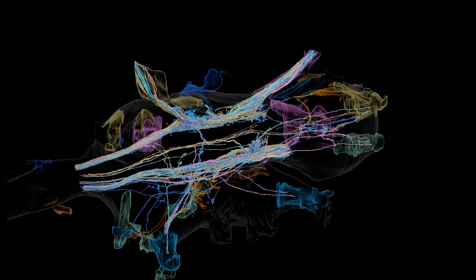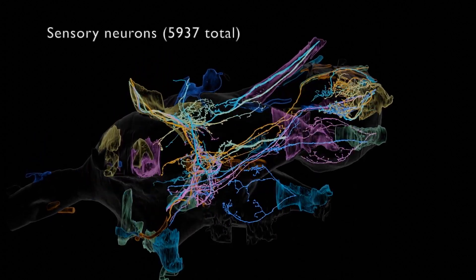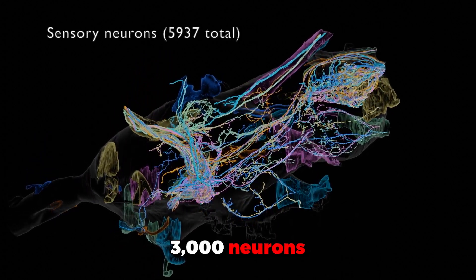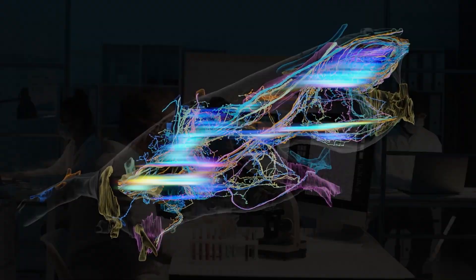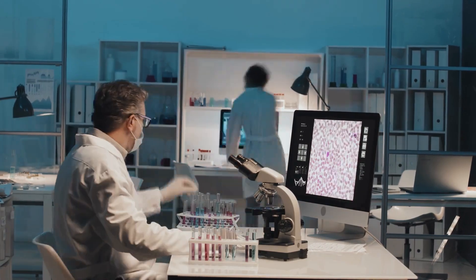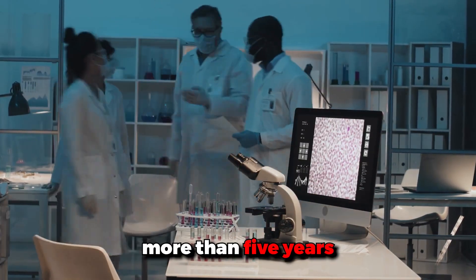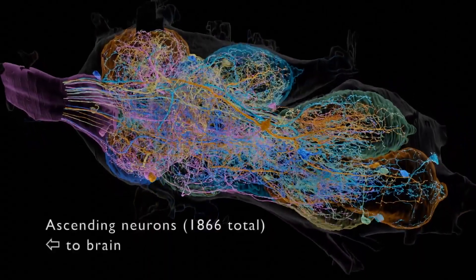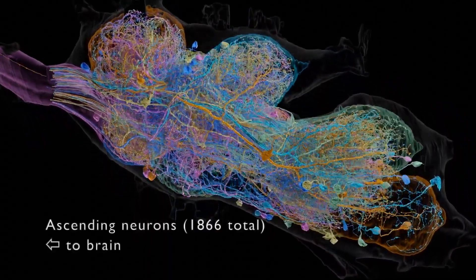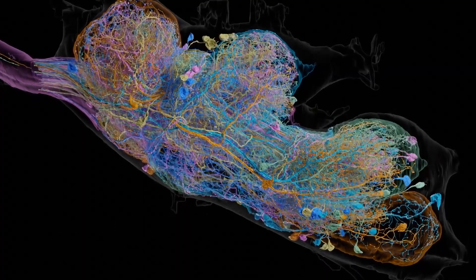Developing this map took an international team of scientists more than five years. Although a fruit fly brain is much simpler than that of humans, the techniques developed will help map more complex brains in the future.